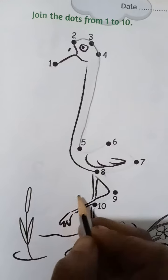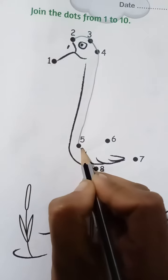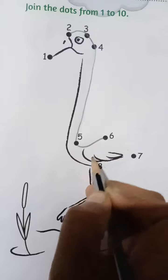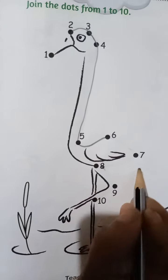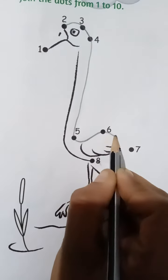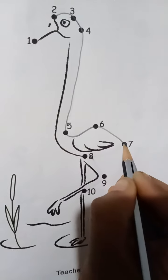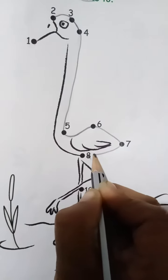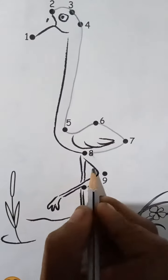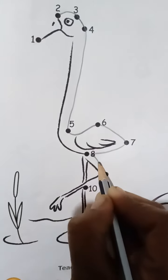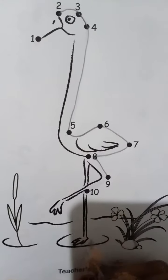After 5 comes 6, so 6 will be joined. After 6 comes 7, so 7 will be joined. After 7 comes 8, so 8 will be joined. After 8 comes 9, so 9 will be joined.